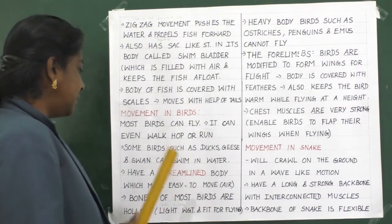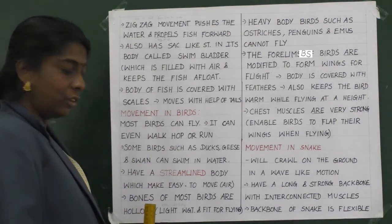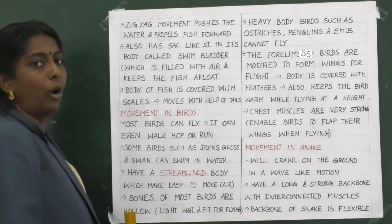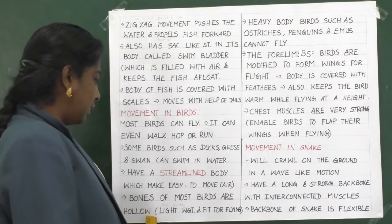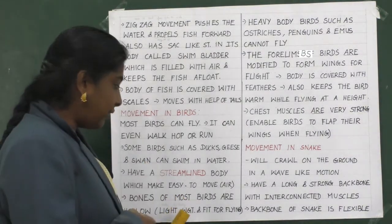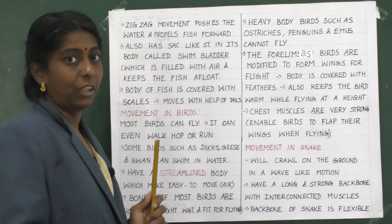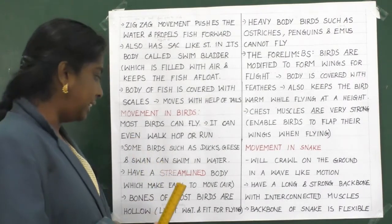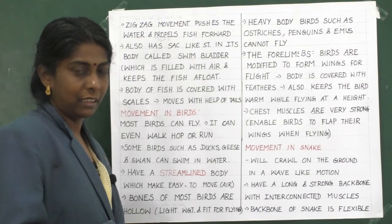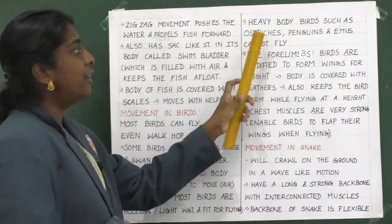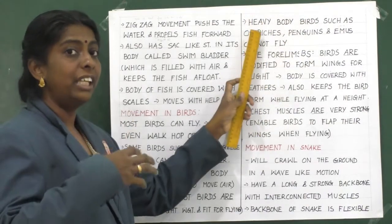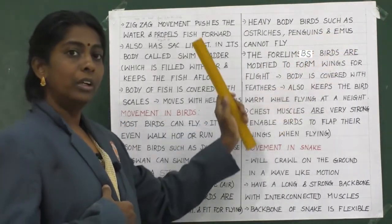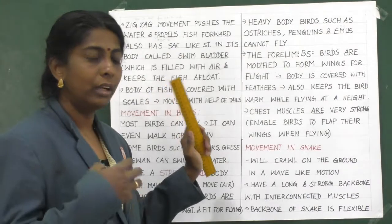Birds have bones, and the bones of most birds are hollow. The hollow bones make the body lightweight and fit for flying. However, there are some heavy-bodied birds such as ostriches, penguins, and emus which cannot fly.